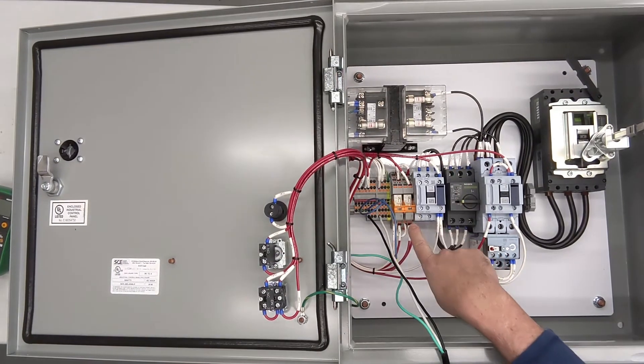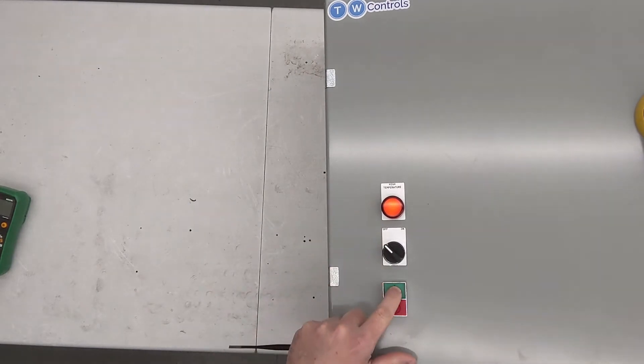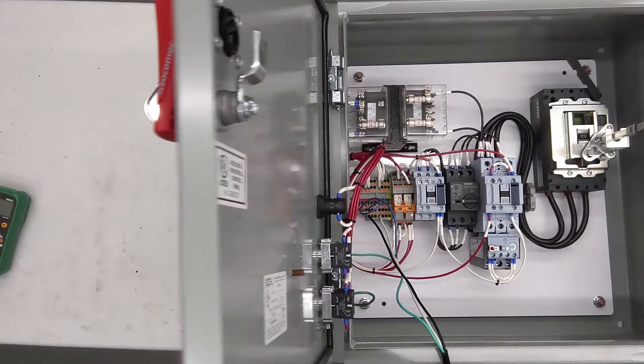Now only the right relay is energized, light still on, and it will not energize. Click here for some other control panel examples.